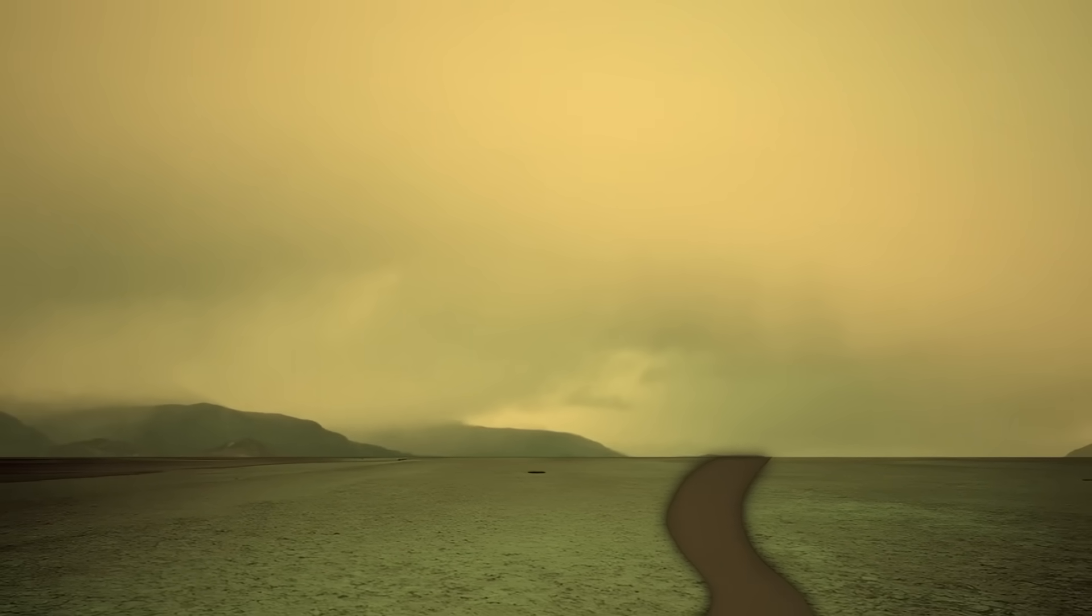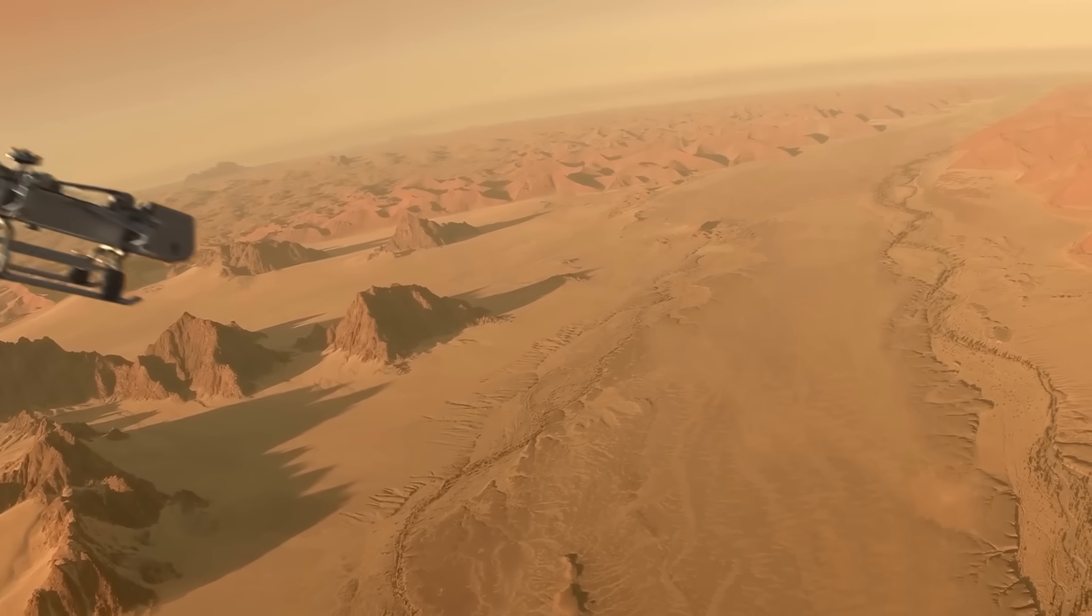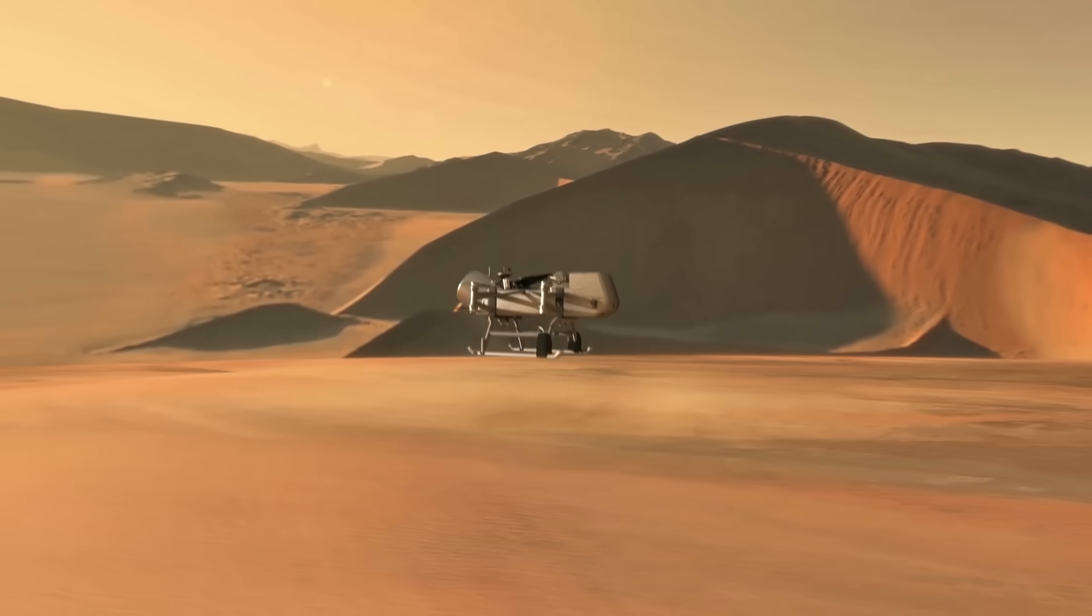The combination of a thick atmosphere and weak gravity means that a person in a wingsuit could essentially jump off a cliff and fly like a bird for as long as they want. It also makes a flying machine a perfect vehicle for exploring the surface.